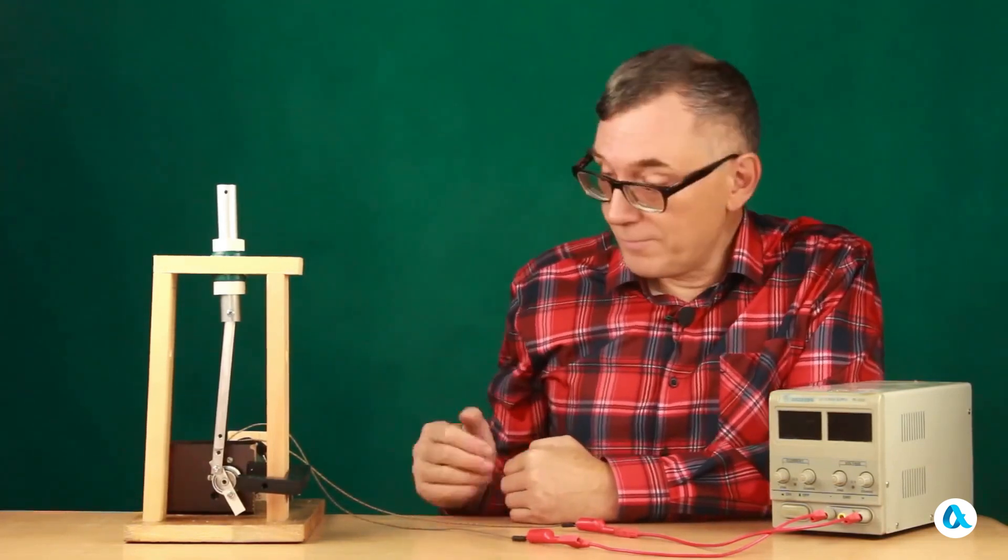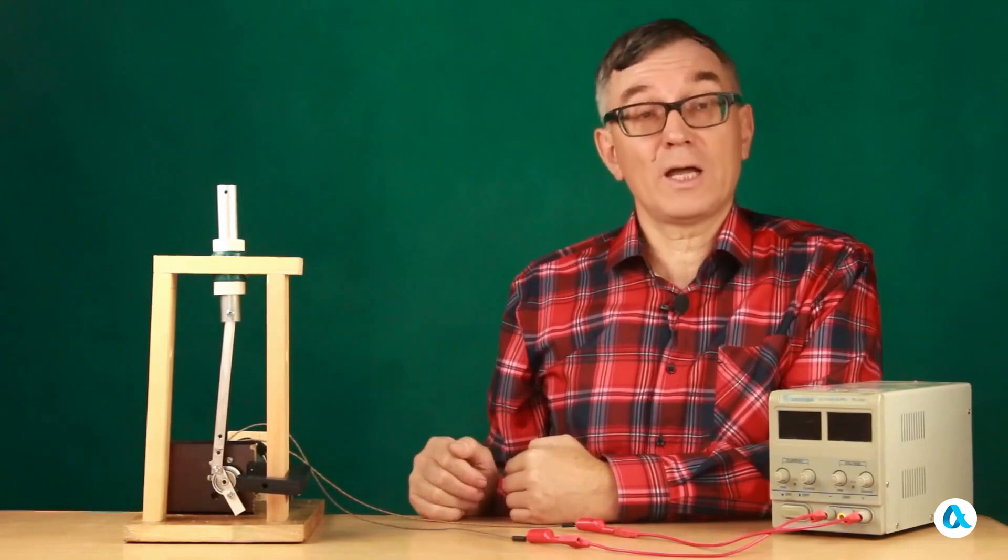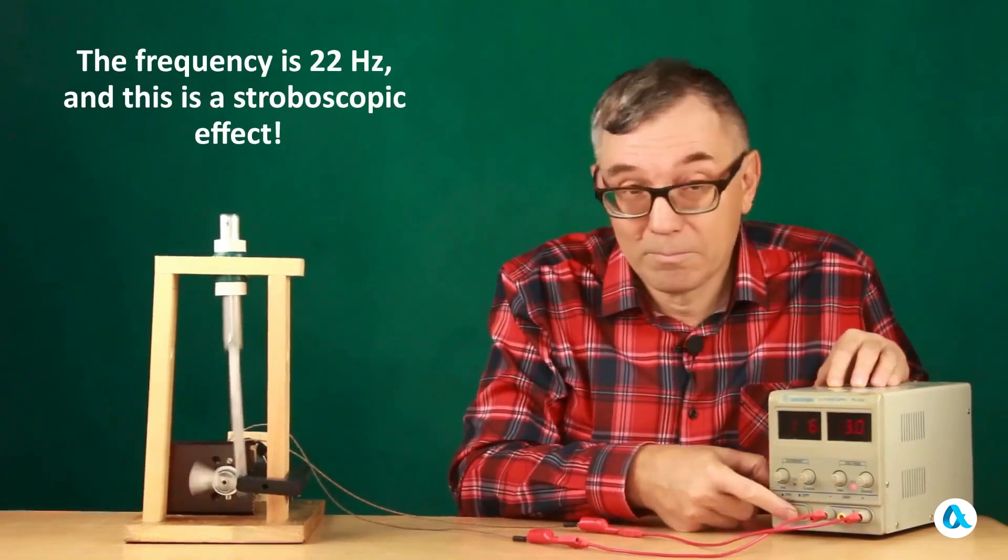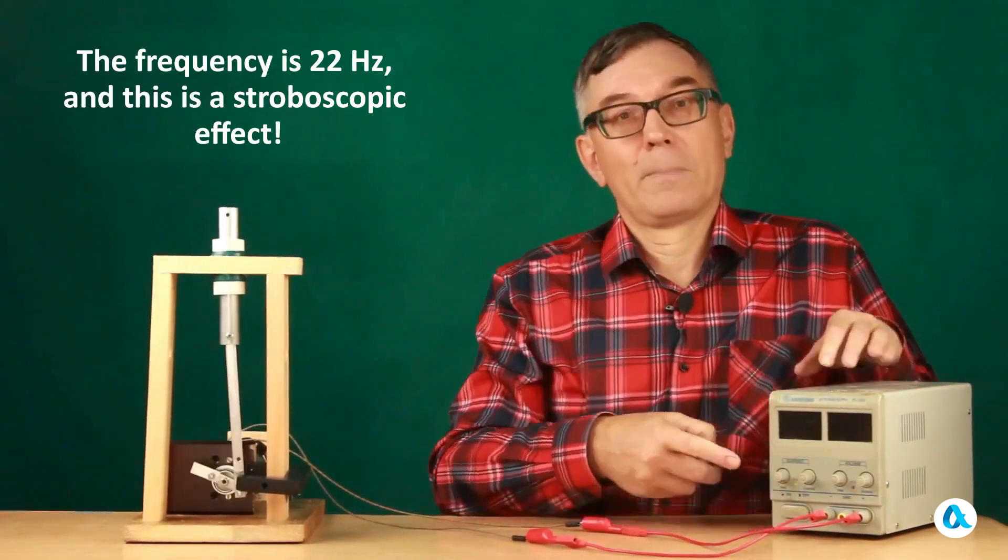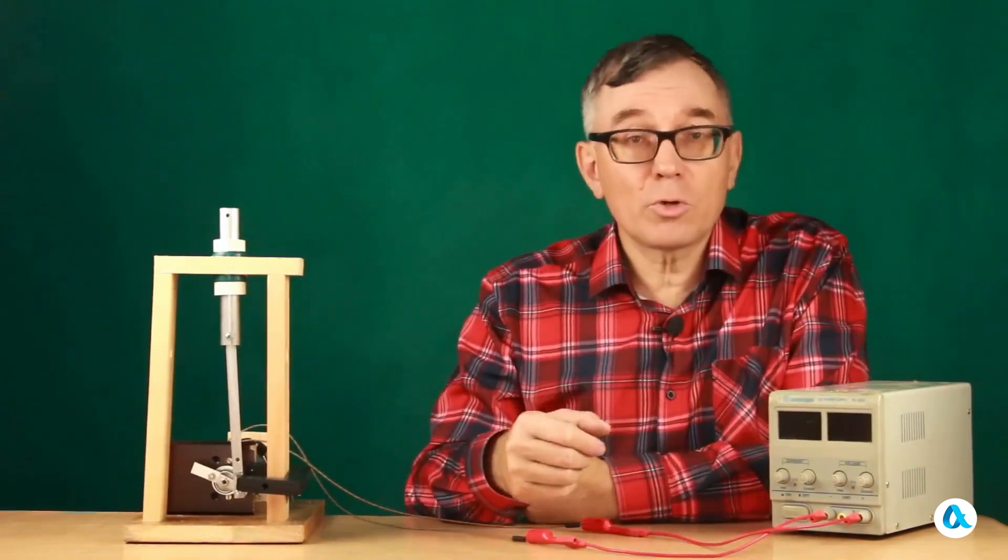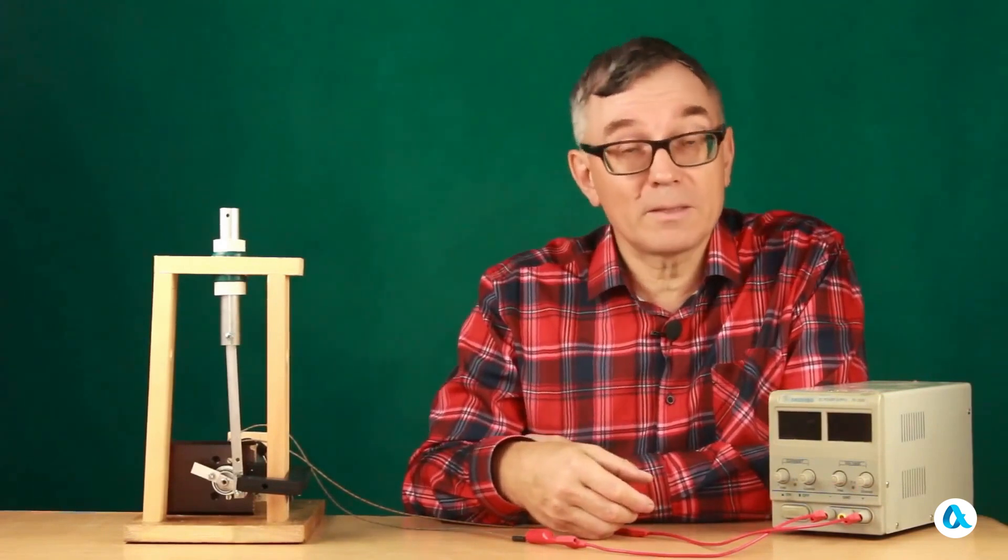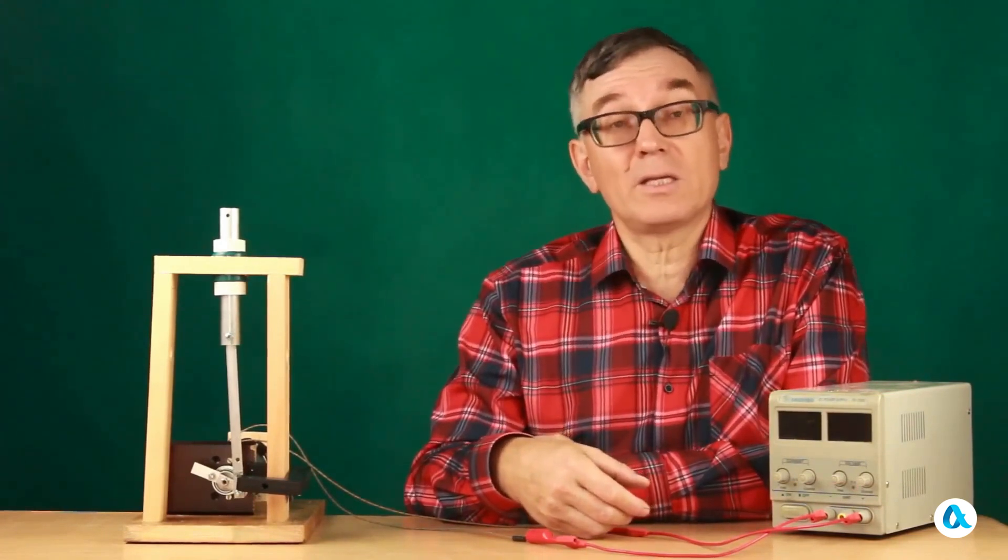The electric motor drives a crank slider mechanism, and the piston moves with a swing of 4 cm. That is, the amplitude of the oscillations is 2 cm.